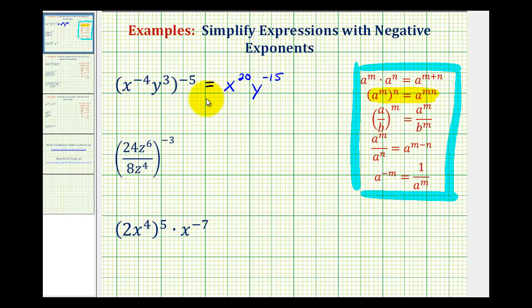Now, we're not allowed to have negative exponents in a simplified expression. So if we write this as a fraction by putting this over 1, if we move y to the negative 15th to the denominator, it's going to change the sign of the exponent.